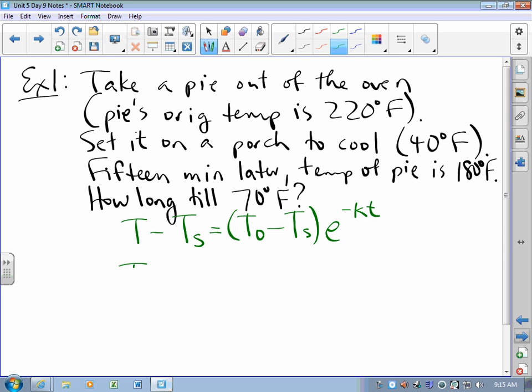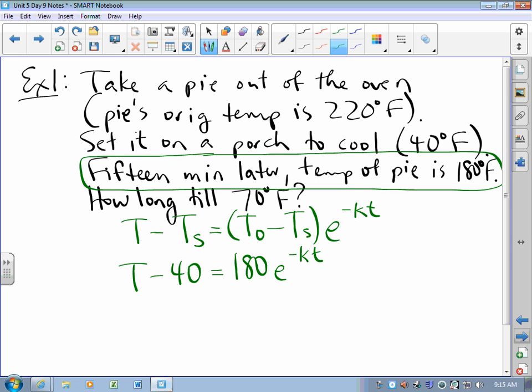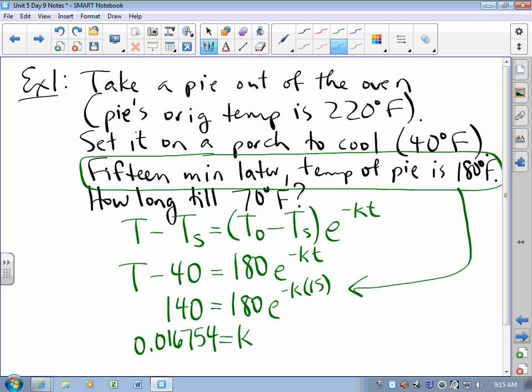So now we use this piece of information and say that when the temperature of the pie is 140 degrees above the temperature of its surroundings, the time that has elapsed is 15 minutes. And through the wonders of a calculator, we figure out that K is 0.016754. That's the calculator talking.